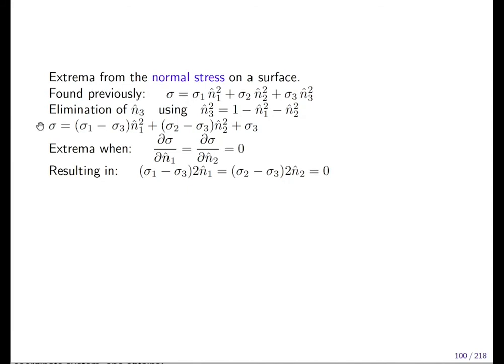The normal stress is extreme when you derive it with respect to the one component or the two component and the derivative is zero. For shear stress we also use that trick, and this results in (sigma one minus sigma three) equals (sigma two minus sigma three) must be zero.